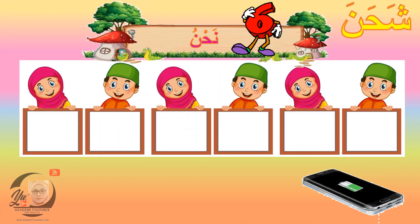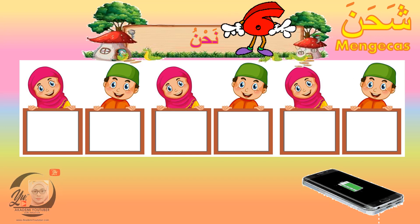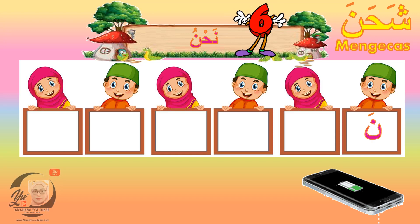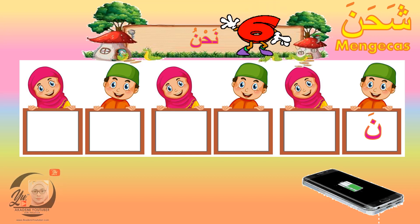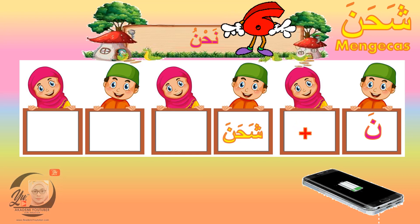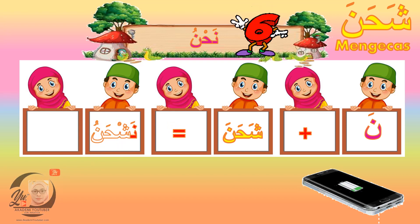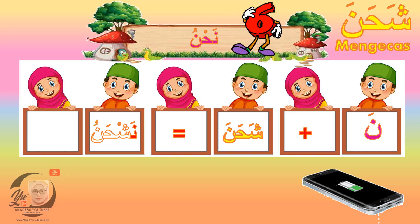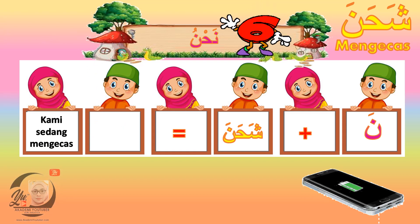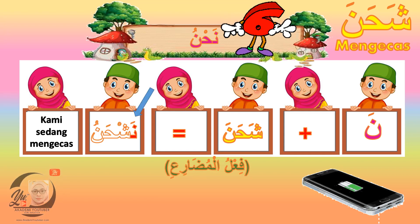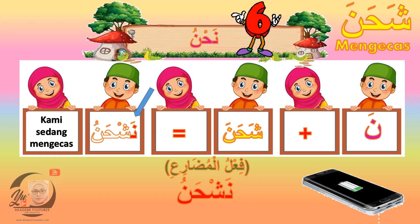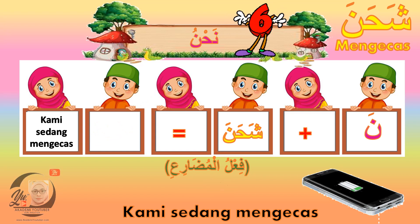Nahnu — dhamir Nahnu bermaksud kami. Penggunaan kata nama Nahnu dalam fi'lul mudari'i atau kata kerja sedang berlaku adalah seperti berikut. Huruf NUN ditambah di awal perkataan sebagai singkatan dhamir Nahnu. Kemudian dimasukkan ke dalam perkataan syahana menjadi Nashhanu. Huruf NUN di awal perkataan sebagai singkatan Nahnu, membawa maksud kami sedang mengecas. Fi'lul mudari'i di sini adalah Nashhanu, yang bermaksud kami sedang mengecas.